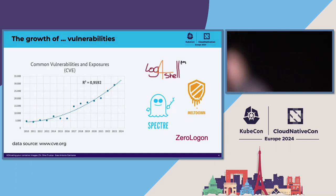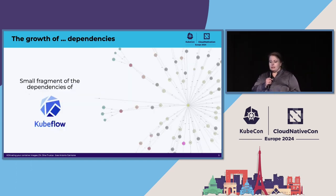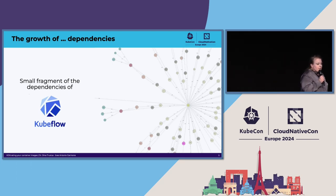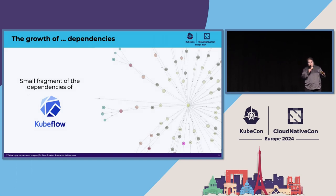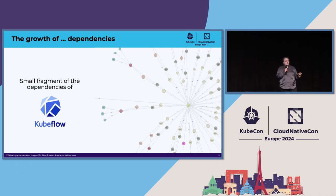Coming to the next challenge — because I don't think that vulnerabilities are the only challenge we experience. The next spiky challenge is dependencies. What you see here is just a small snippet, just a little part of the Kubeflow dependencies. The complexity is growing, and just by statistics, when you have a thousand lines of code, it is possible that you have at least three vulnerabilities in it, just by chance.